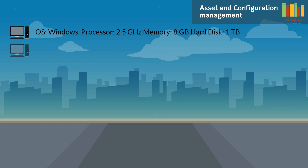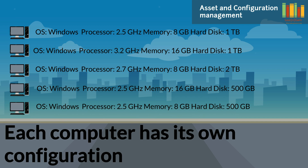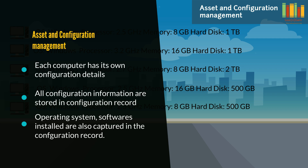Take an example of a set of computers. Each computer mentioned here has a unique configuration; some may have the same configuration but might be used for a different purpose. All the configuration details are stored in a configuration record. A configuration record has all hardware information like processor, memory, and display card.